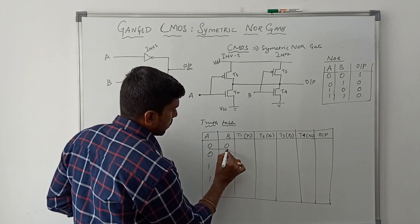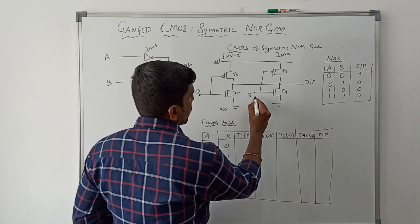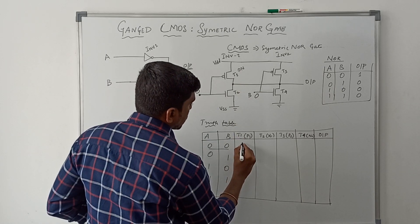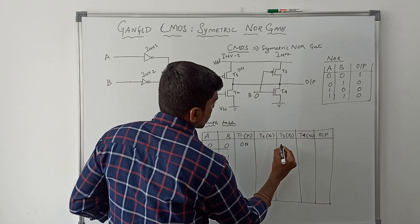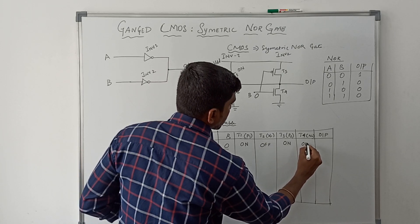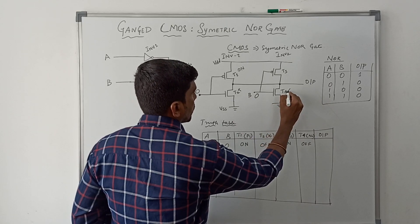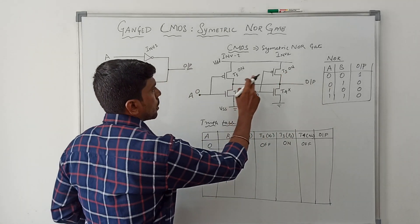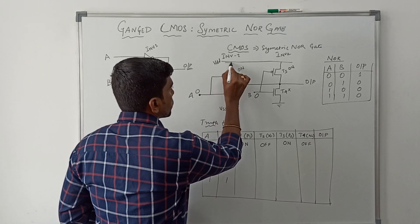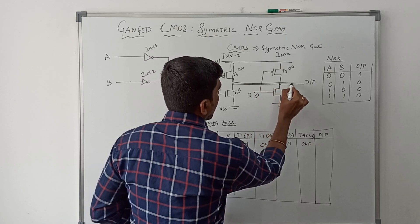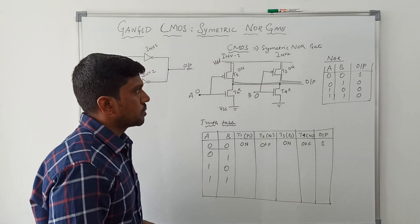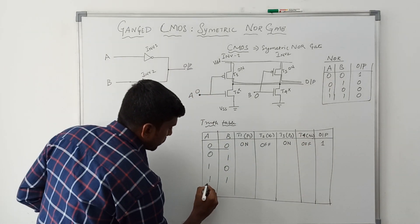Taking input A=0, B=0: T1 transistor turns on, T3 transistor turns on, T2 transistor turns off, and T4 transistor turns off. These two pull-up transistors turn on and these two pull-down transistors turn off. In this case VDD is connected to the output, so the output value is one. Both the truth table output and circuit output are the same.